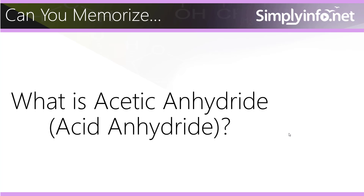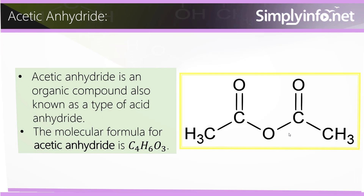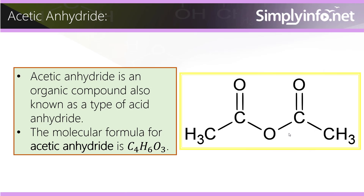Can you memorize what is acetic anhydride? Acetic anhydride is an organic compound also known as a type of acid anhydride. The molecular formula for acetic anhydride is C4H6O3.